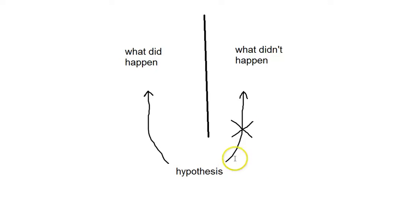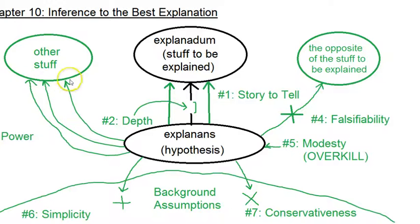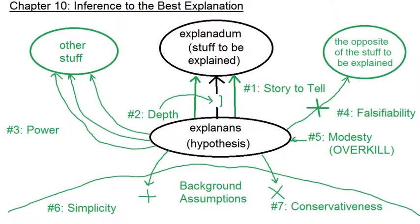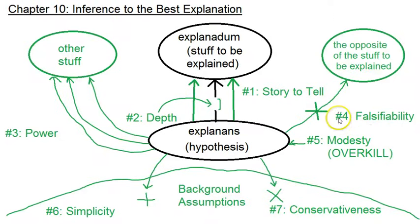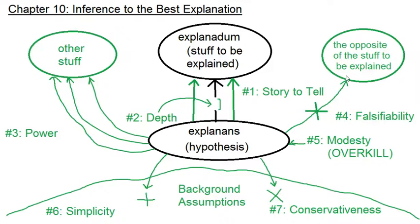We actually want the hypothesis to not work if something different had happened instead. When you're trying to test whether an explanation is falsifiable, imagine that something different had happened instead of the thing that did happen — just imagine the opposite. Then ask: could you use the same hypothesis to explain that? If it fails, that's a good thing. If it doesn't fail, then there's a problem with falsifiability — that makes for a worse explanation.